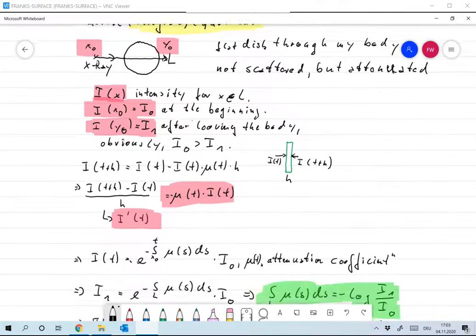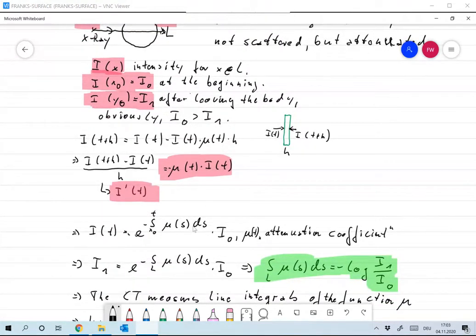Okay, now this is a very very simple ordinary equation, so we can easily give the solution. The solution is given by I(t) equals e to the minus integral from x0 to t of μ(s) ds times I0, and it already satisfies the initial value condition I(x0) should be I0.